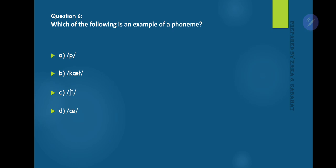Question number 6: Which of the following is an example of a phoneme? Option A is the correct answer. A phoneme is the smallest unit of sound that can distinguish words in a particular language. In this case, /p/ is a phoneme because it can differentiate words like 'pat' and 'bat'.